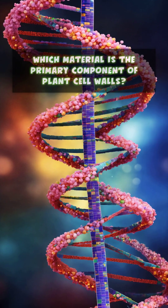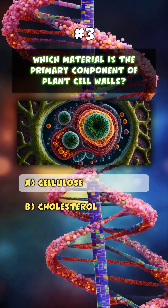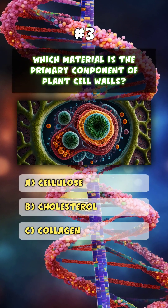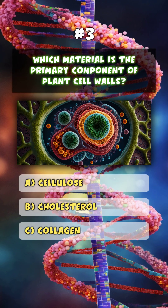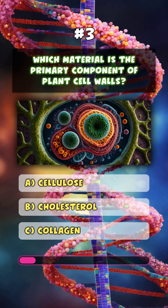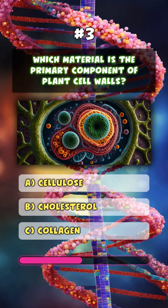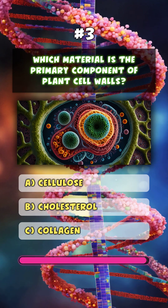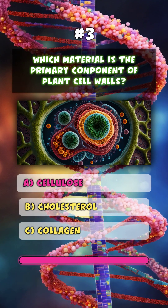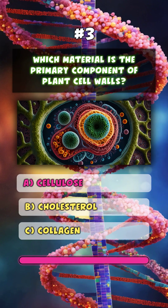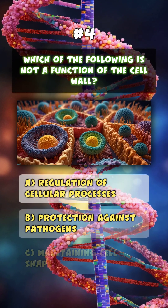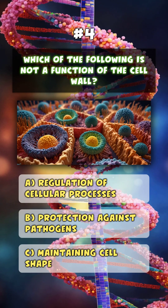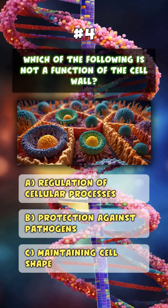Which material is the primary component of plant cell walls? A. Cellulose. Which of the following is not a function of the cell wall?